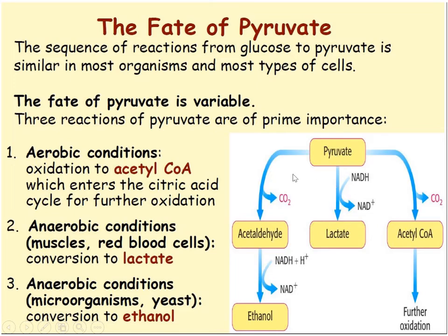Through glycolysis, one molecule of glucose produces two molecules of pyruvate. Then there are three possible fates of pyruvate: under aerobic conditions, pyruvate is oxidized to acetyl-CoA and enters the citric acid cycle for further oxidation. Under anaerobic conditions (like in muscles or red blood cells), pyruvate is converted into lactate. In other anaerobic conditions (like in microorganisms or yeast), pyruvate is converted into ethanol.